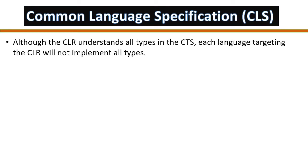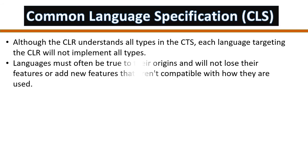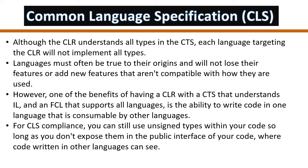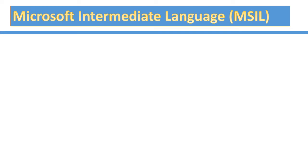CLS stands for Common Language Specification. Every type must be understandable by the CLR. Although the CLR understands all types in the CTS, each language targeting the CLR will not implement all types. Languages must remain true to their origins and may not implement features incompatible with how they are used. One benefit of having a CLR with a CTS that understands IL and an FCL that supports all languages is the ability to write code in one language that is consumable by other languages. For CLS compliance, you can use unsigned types within your code as long as you don't expose them in the public interface. .NET supports 50-plus languages.